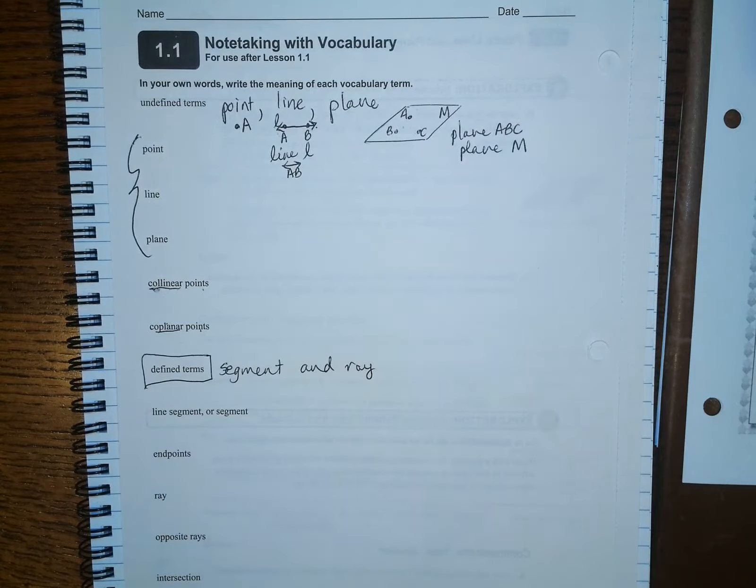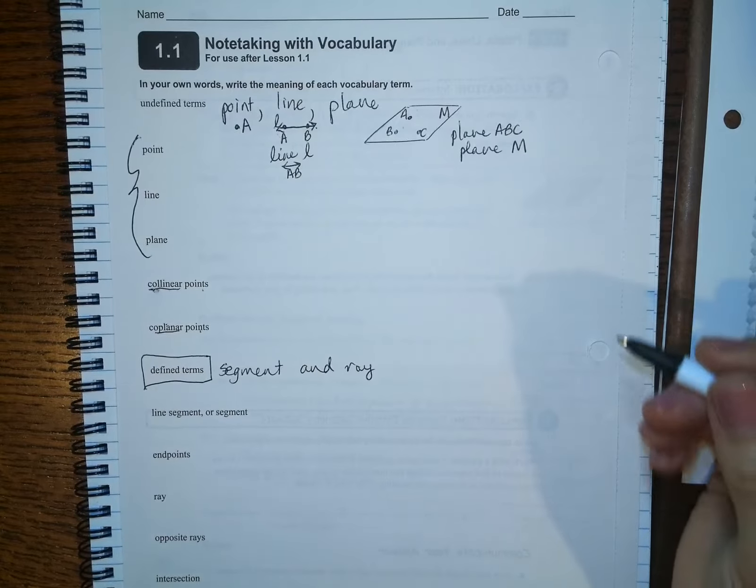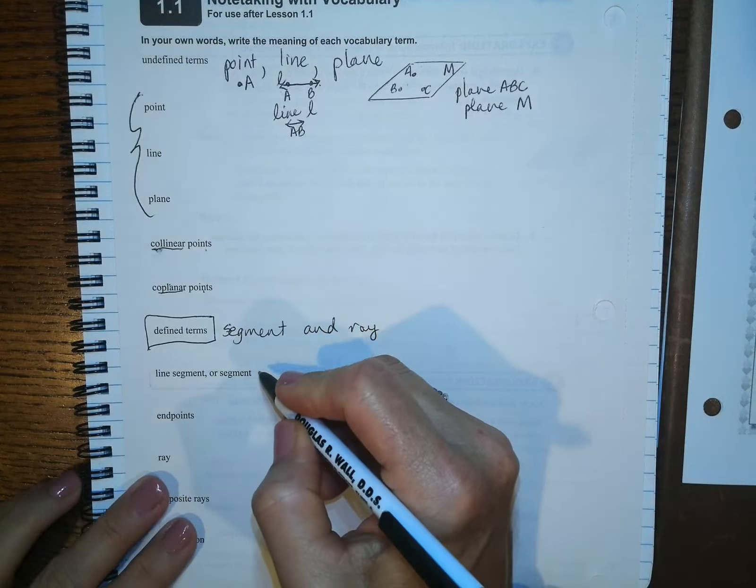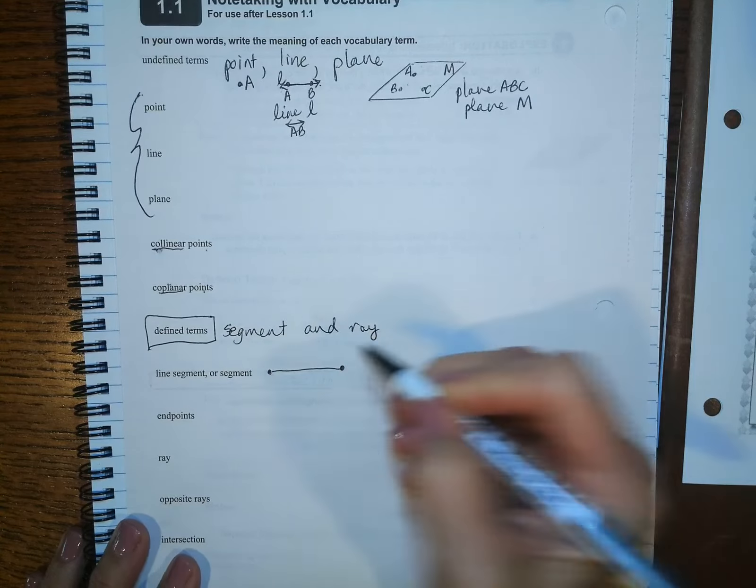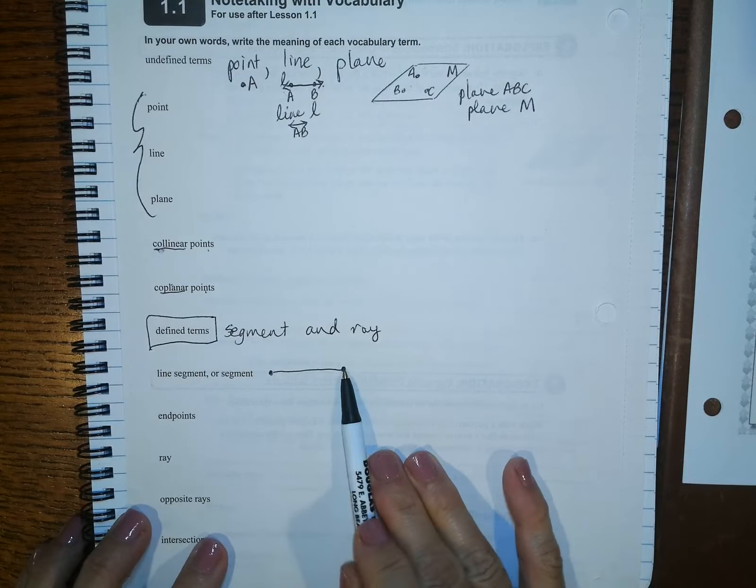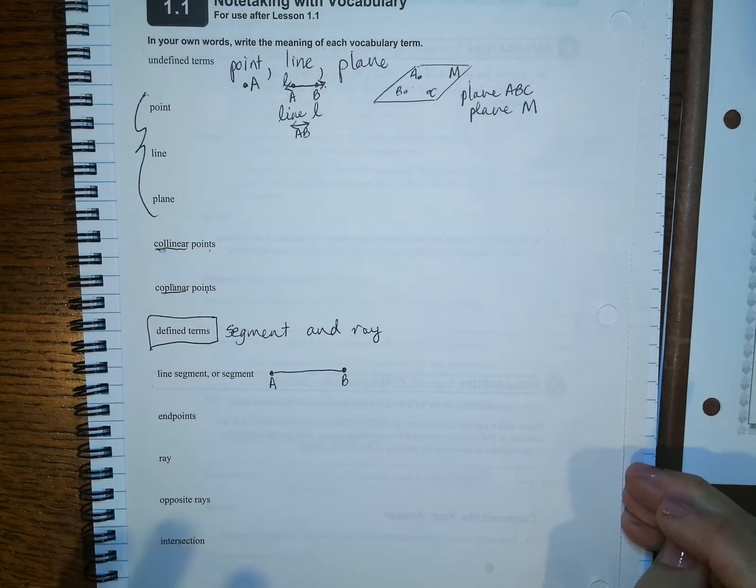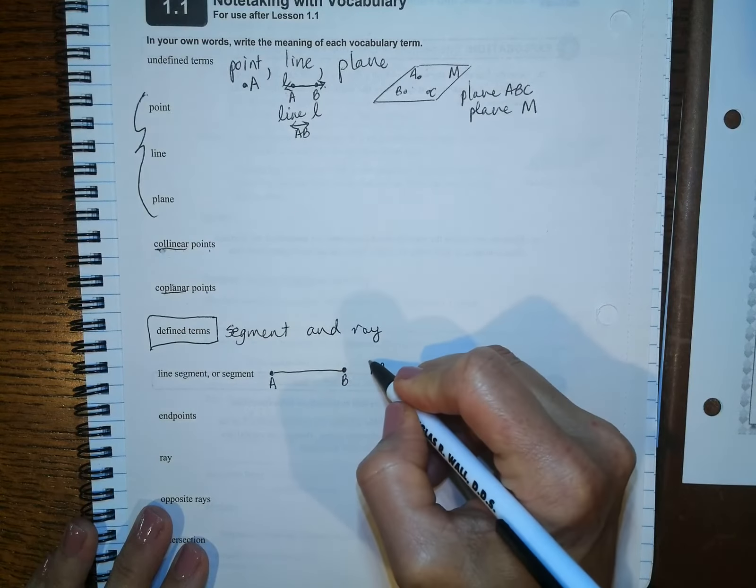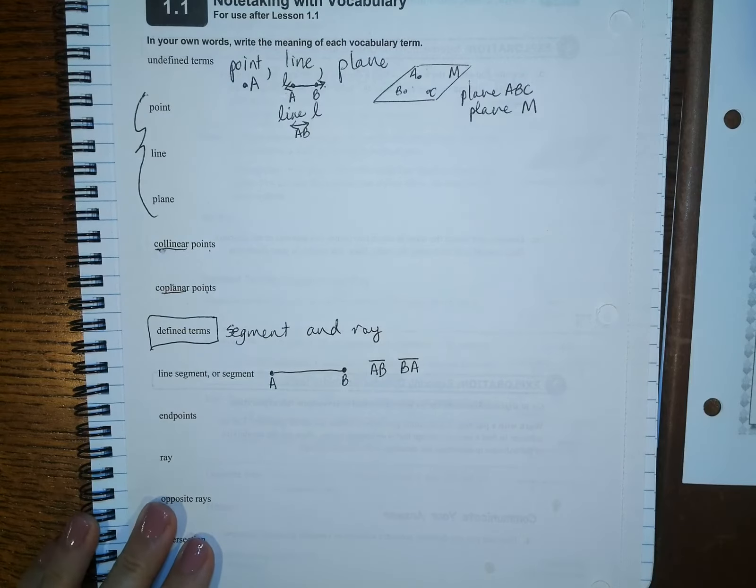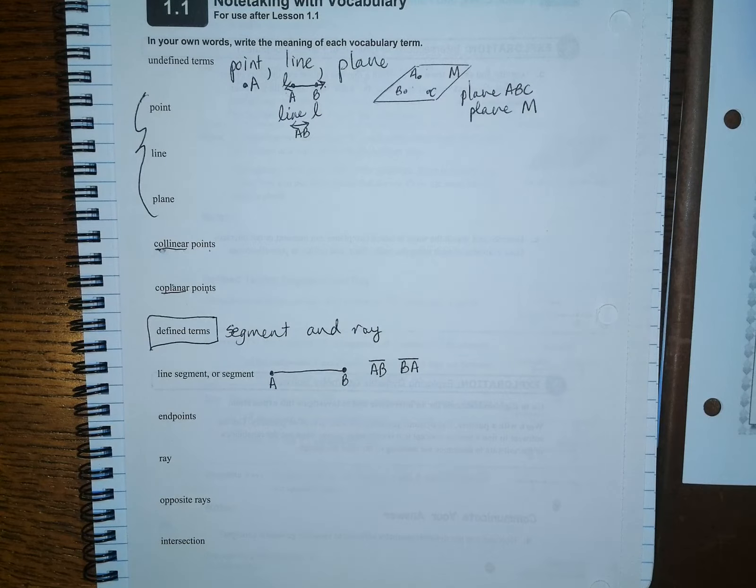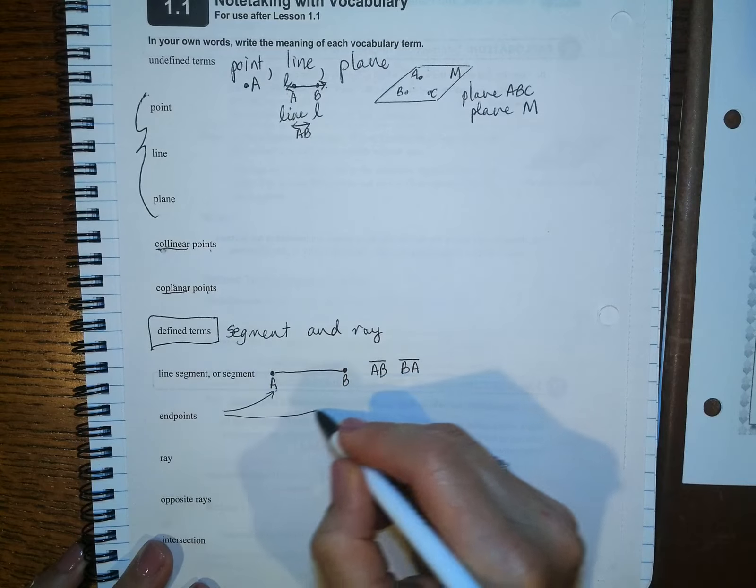Then we get to defined terms that are called segments and rays. Okay, a line segment obviously is a part of a line. And we usually just call them segments. And it is represented with two dots at the end, meaning it does not go on. Like a line goes on forever, a segment does not. So let's say this is AB. And we label them that way. You can write it as segment AB with a little line over it. You actually can also write it as BA with a line over it. Because that's the same length. It is the same distance. And then A and B are the endpoints.